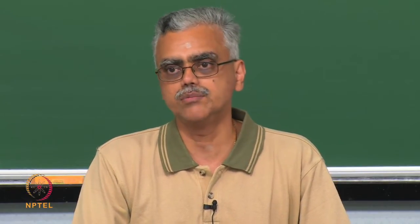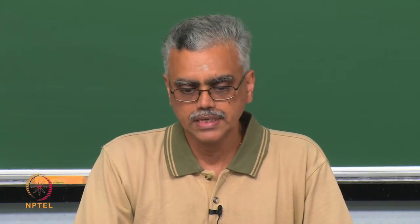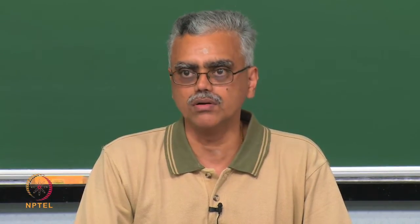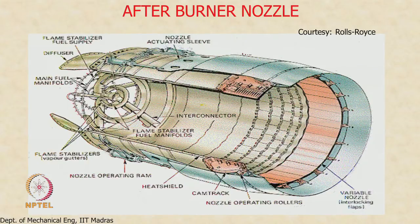The purpose of a nozzle is to produce thrust and also to be used for thrust reversing. However, an afterburner nozzle will not have the capability for thrust reversing. So it will produce thrust, but in addition it must also be able to operate with the afterburner on. The nozzle is somewhat specialized, and as you can see, it is longer because there is a constant area duct where we inject fuel.